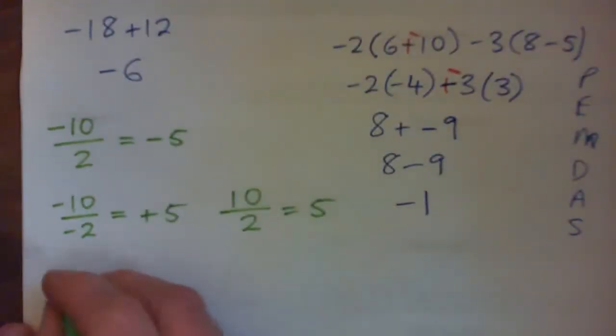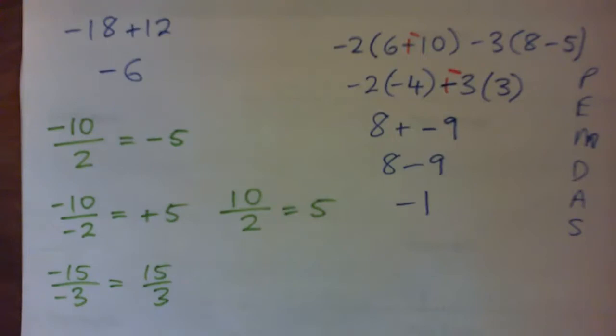And you don't have to, it doesn't have to equal, the numbers don't, the digits don't have to change. You could just say, you know, negative 15 over negative 3 is just like, you know, 15 over 3. I mean, that's correct. You know what I mean? I mean, it is 5 either way, right?